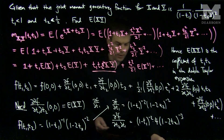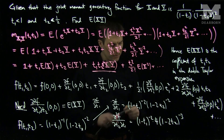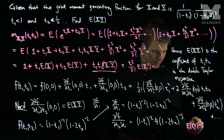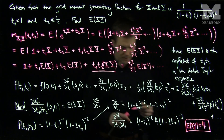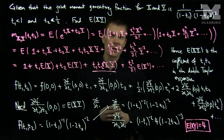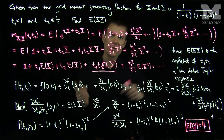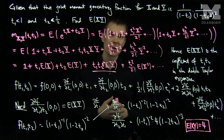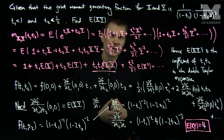Now if we plug in 0 to this formula, (1 minus 0) to the negative 2 becomes 1, (1 minus 0) to the negative 3 becomes 1, and the constant is 4. So our conclusion is that the expected value of x times y equals 4. When we're given the joint moment generating function of two random variables, we can write out this series expansion and examine the coefficients of each term, which tell us how to compute expected values of x to the k times y to the l for any integers k and l.